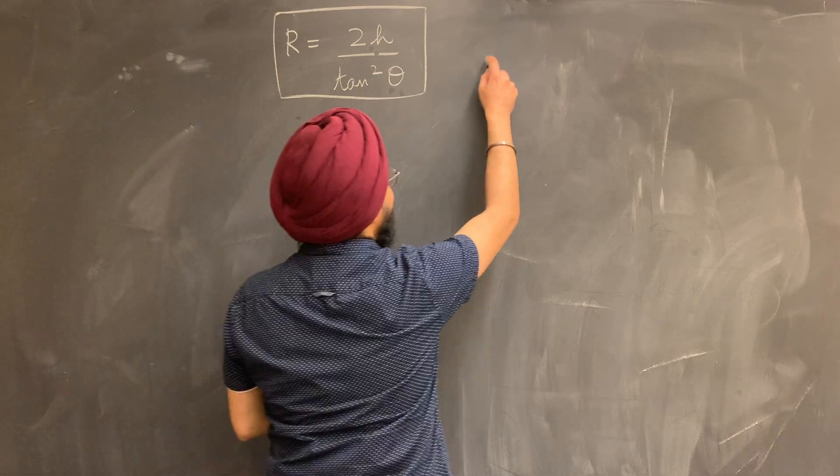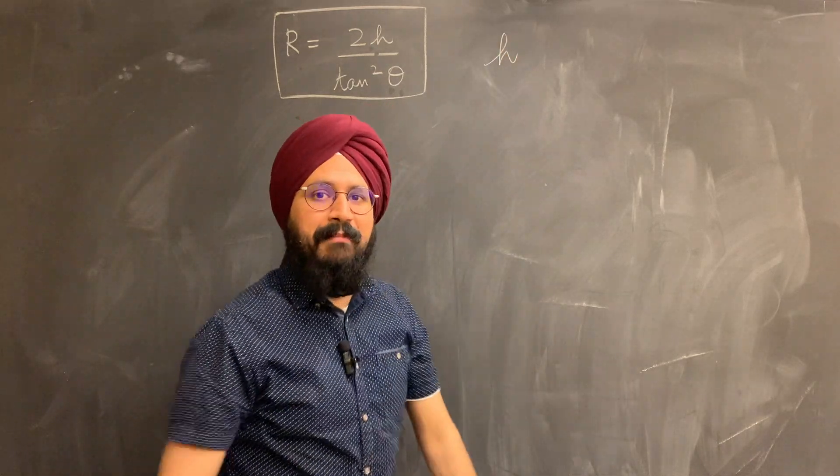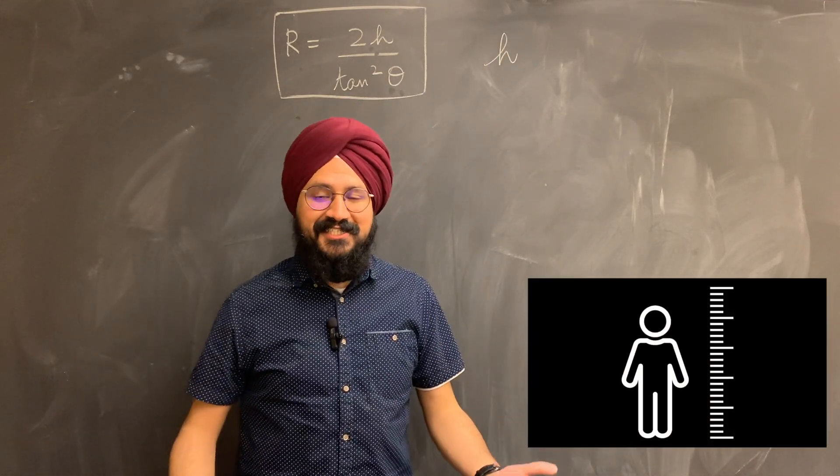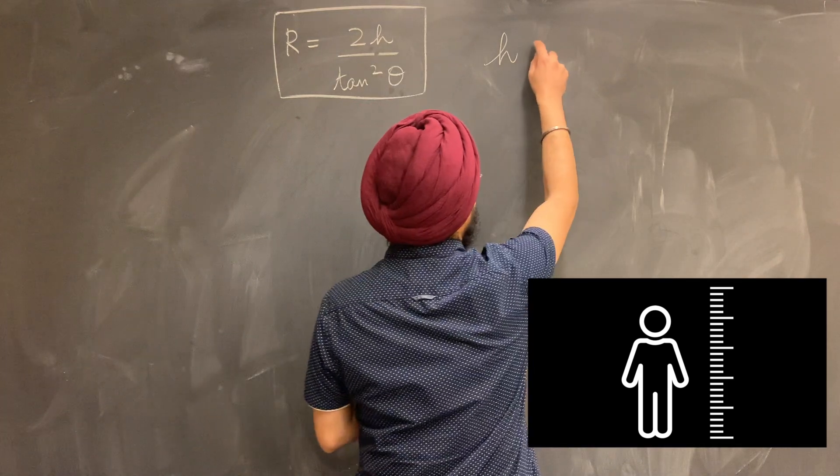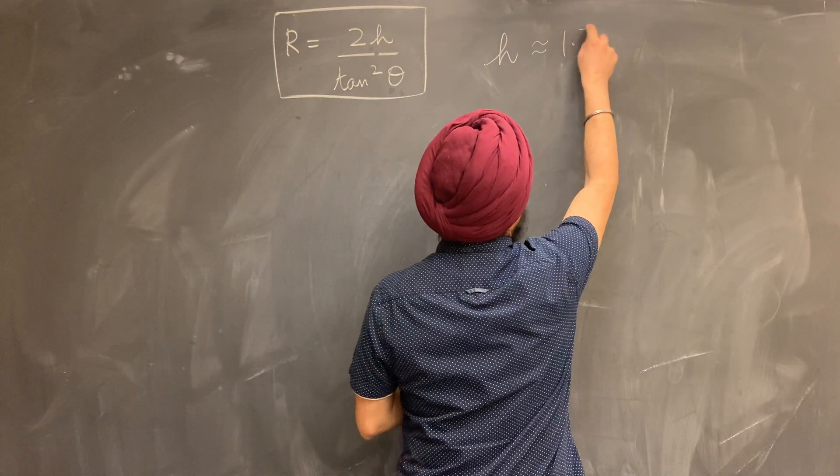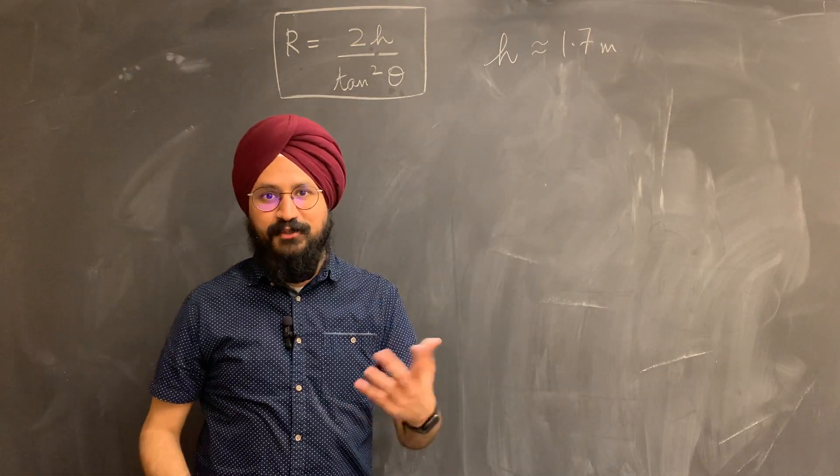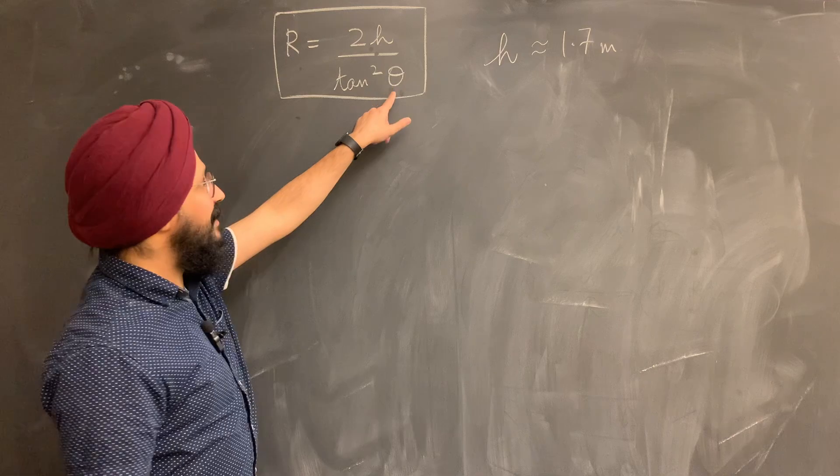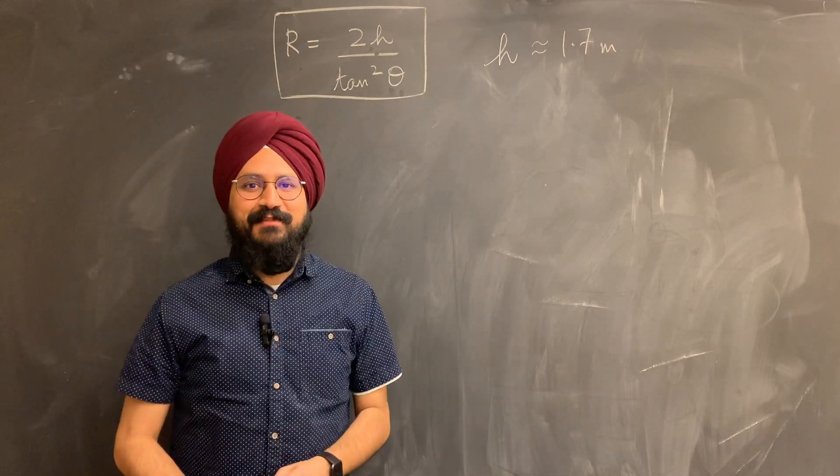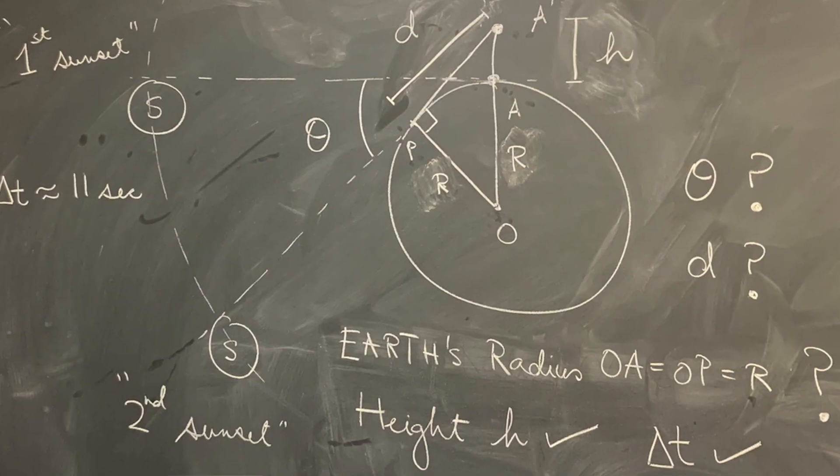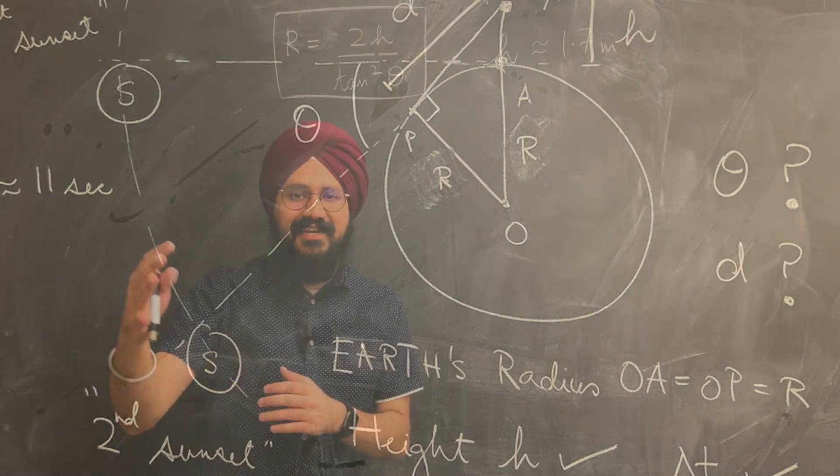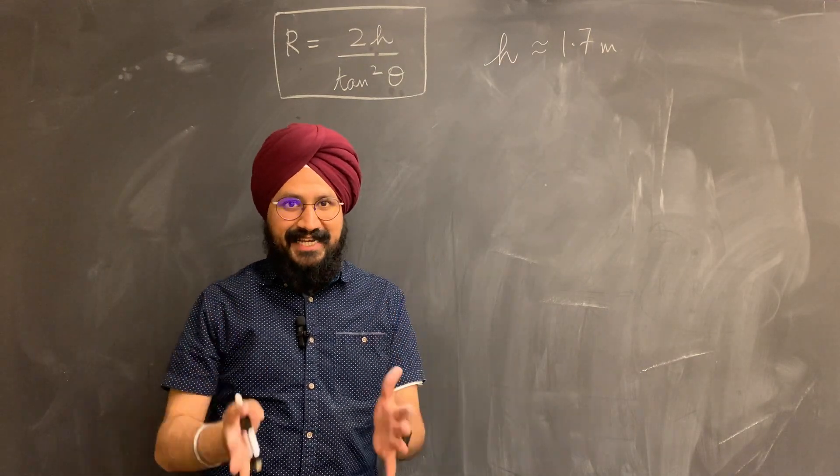Now for H, I can approximate that height by how tall I am, and I measured it. It comes out to be about 1.7 meters, and I'm going to use that as an approximation for the height between my two vantage points when I observe my two sunsets. Now theta is a slightly more tricky part.